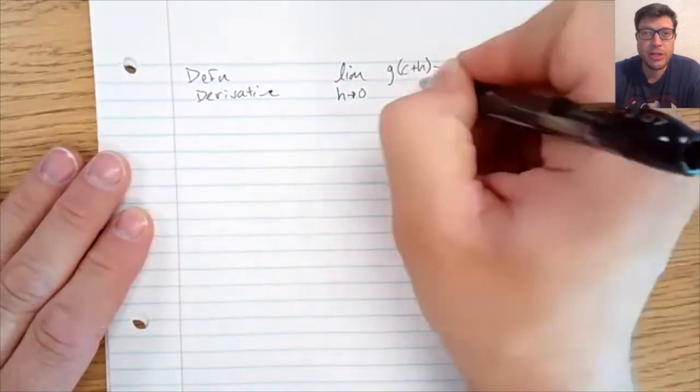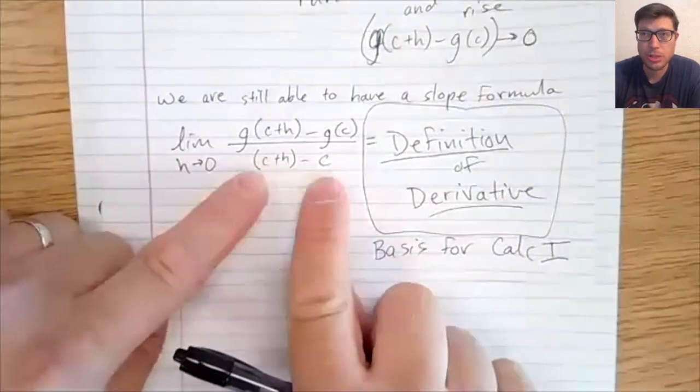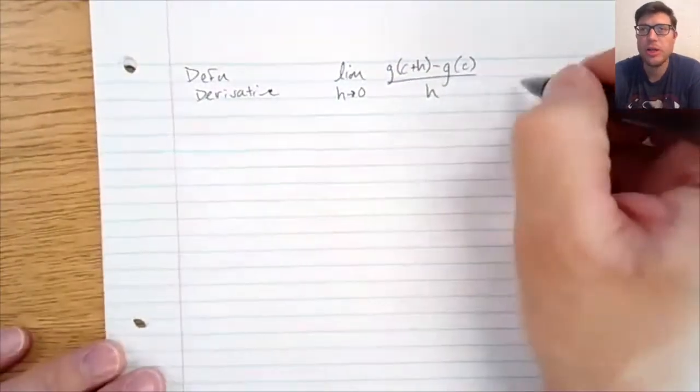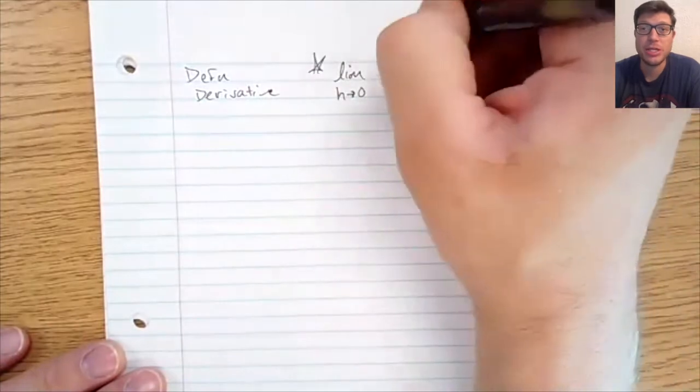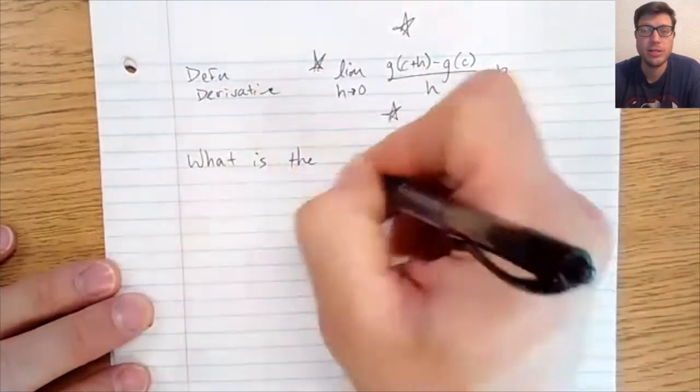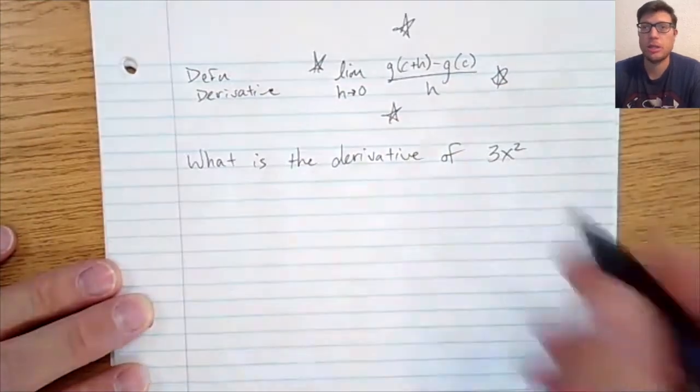We're going to be using the limit definition as h goes to zero. The limit as h goes to zero of the function g or f or whatever. In this case, g of c plus h minus g of c, all of that's divided by h. That is the formula, that is our formula for talking about limits.